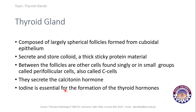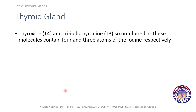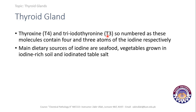Iodine is essential for the formation and proper functioning of thyroid hormones. Thyroxine (T4) is named because it contains four molecules of iodine, and triiodothyronine (T3) contains three molecules of iodine. The main dietary sources of iodine are seafood, vegetables grown in iodine-rich soil, and iodized salt.